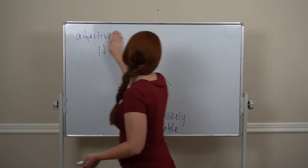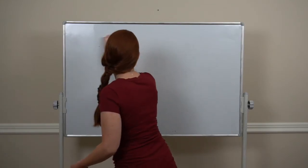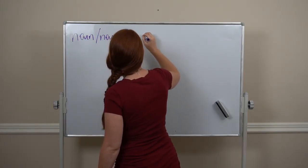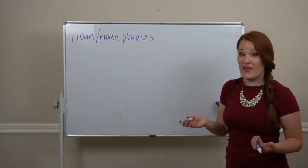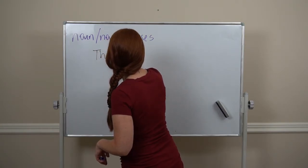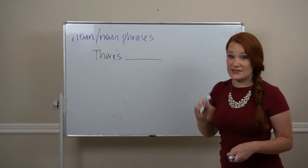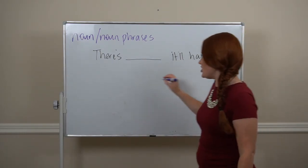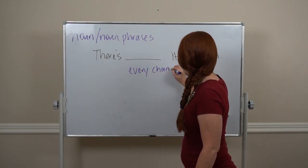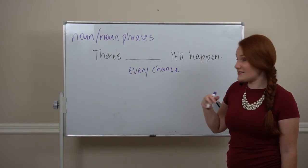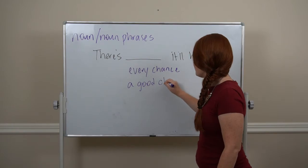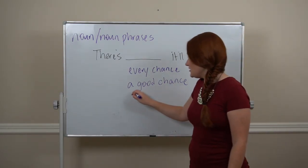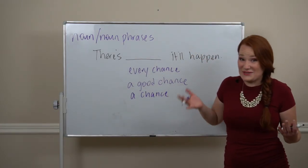Okay, how about some nouns and noun phrases? So with there is, we can put some different nouns here. I can say there's every chance. This is pretty positive. Yeah, it's gonna happen. There's every chance. There's a good chance. A little bit lower, but still probable. I could say there's just a chance. It means we don't know. Maybe.